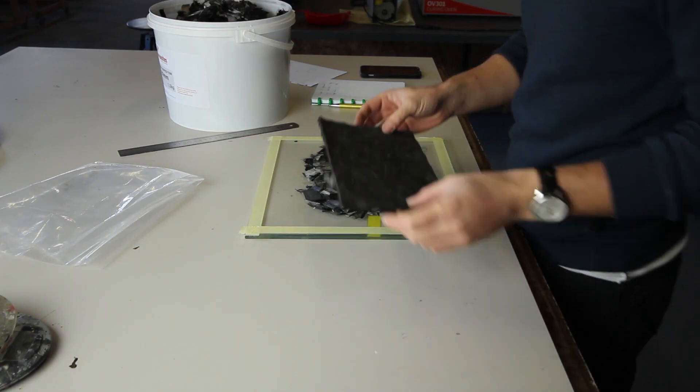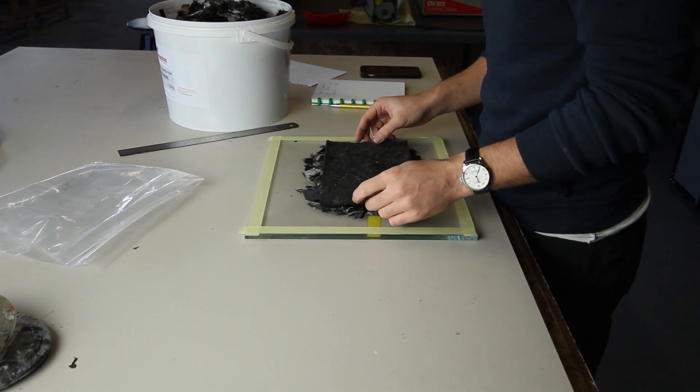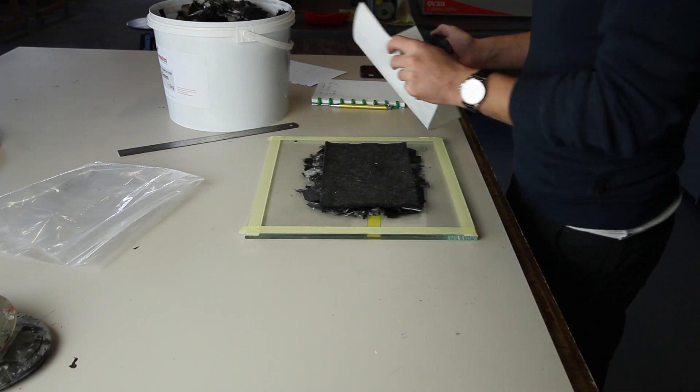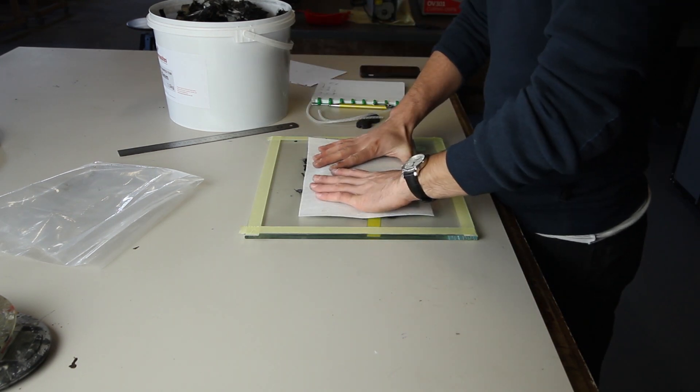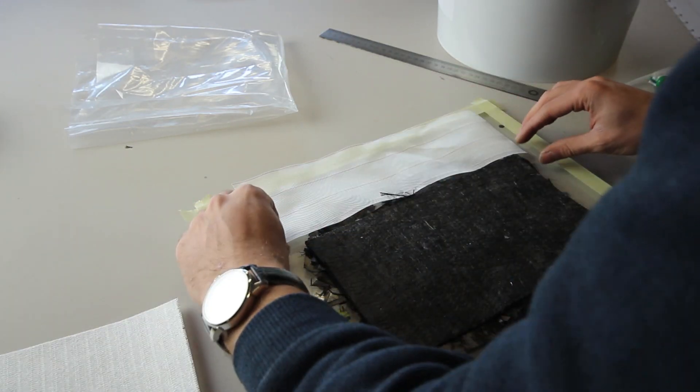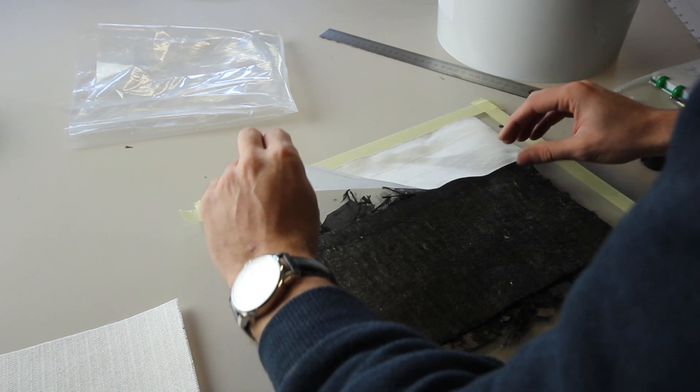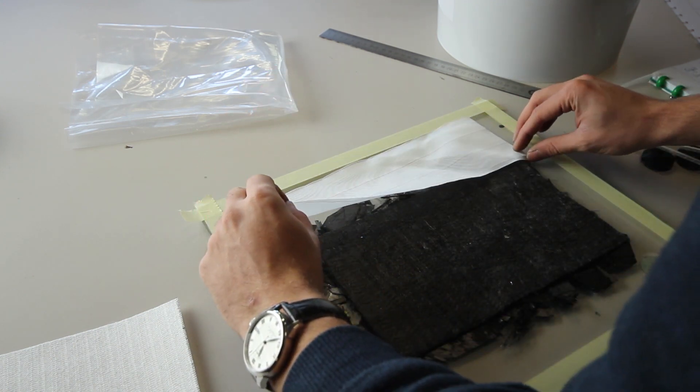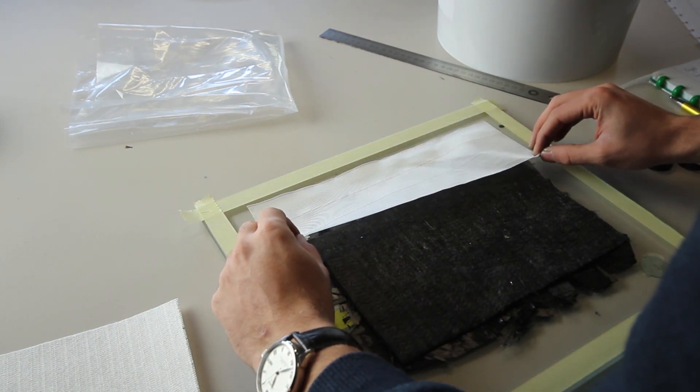So what I'm doing here is measuring everything because the main purpose of this infusion is to know what the resin uptake is into the veil and the chopped fiber, so later we can decide how much resin we have to use for compression molding to do the real forged carbon.